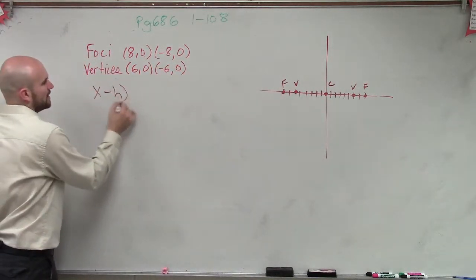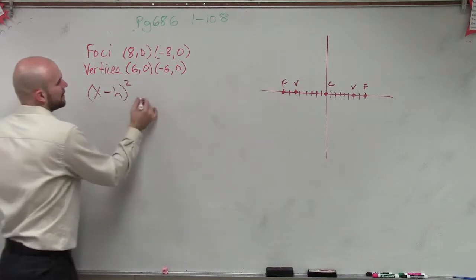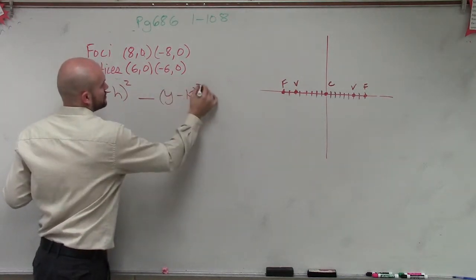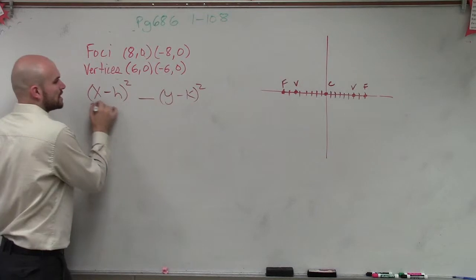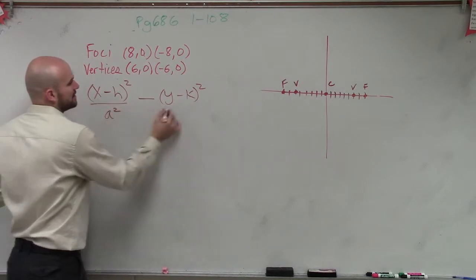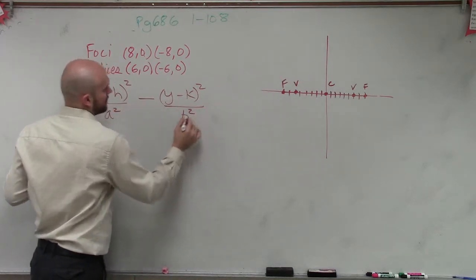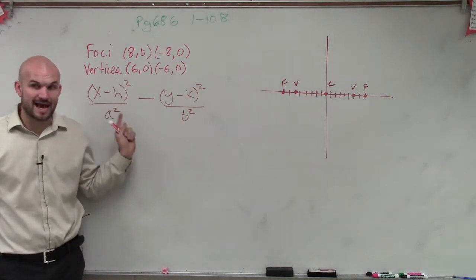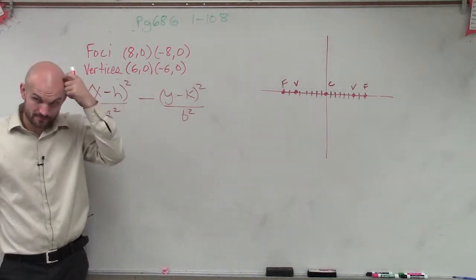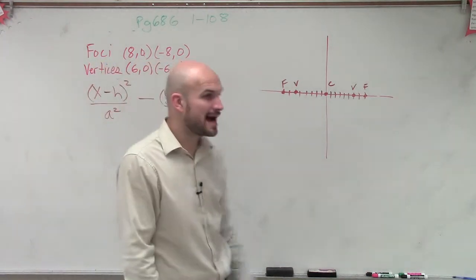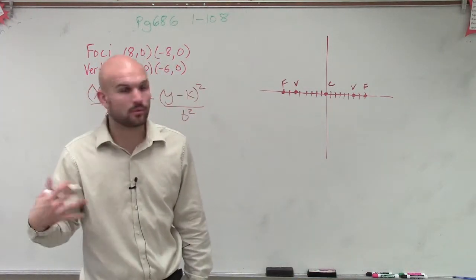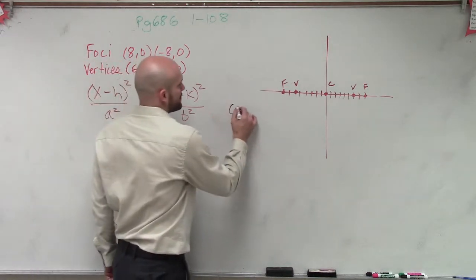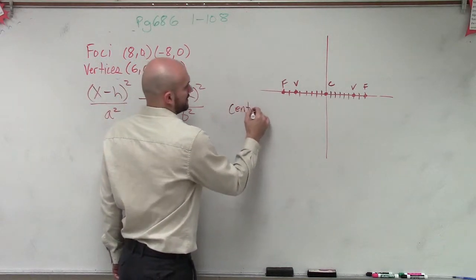On a hyperbola it opens out. So we have the formula: x minus h squared over a squared, minus y minus k squared over b squared. It's always a squared minus b squared. Since it's horizontal, remember the x is over the a. So now we need to go back and remember what all of our terms are. So far, we know the center is (0, 0).